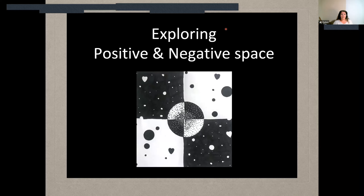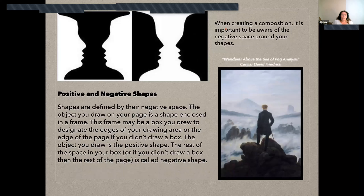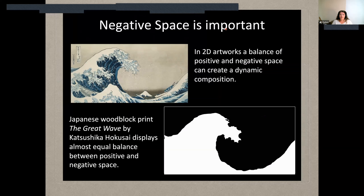Before we dive too far into the element of space, it's really important to understand positive and negative space within our drawing. When we create a composition, it's important to be aware of the negative space around your shapes. The shapes are defined by the negative space — the objects you draw on your page are enclosed in a frame, whether that's something you draw or the boundaries of your canvas or paper. The object you draw is the positive shape, and the rest of the surrounding space is the negative space, which is really important.